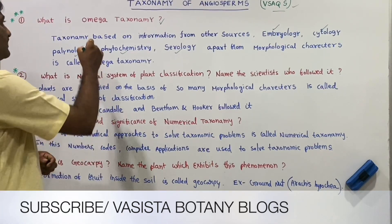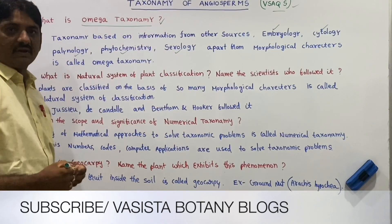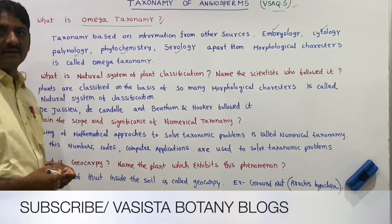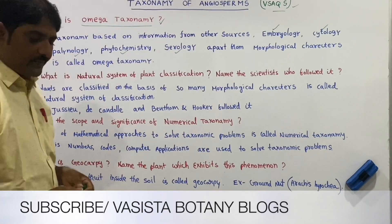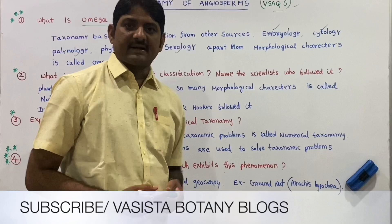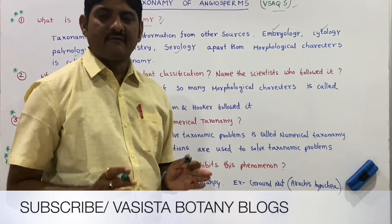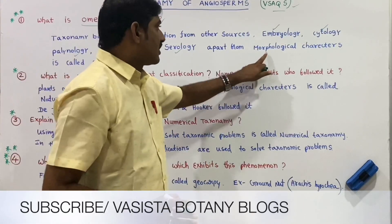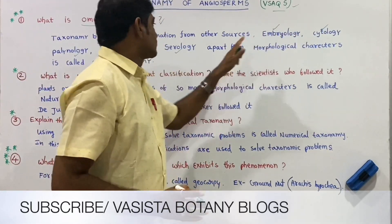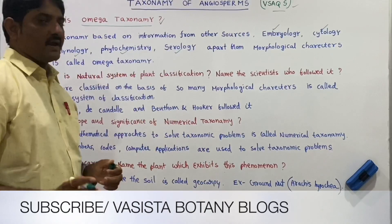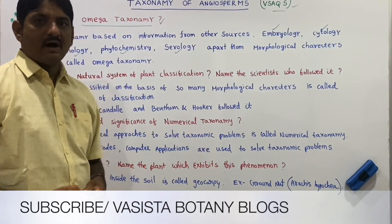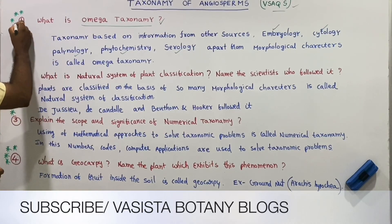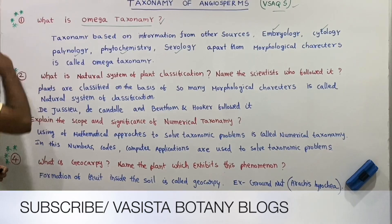So this is called omega taxonomy. In contrast, alpha taxonomy is taxonomy purely based on morphological characters only. If only morphological characters are used for plant classification, it is called alpha taxonomy. If information from other branches is also included, it is called omega taxonomy.